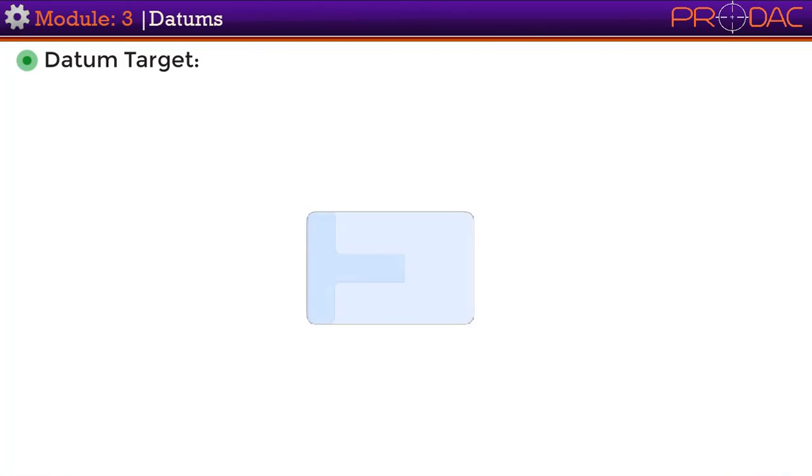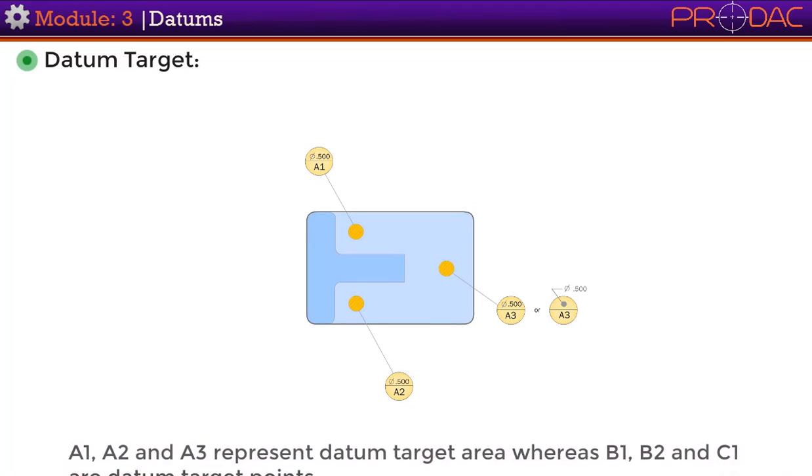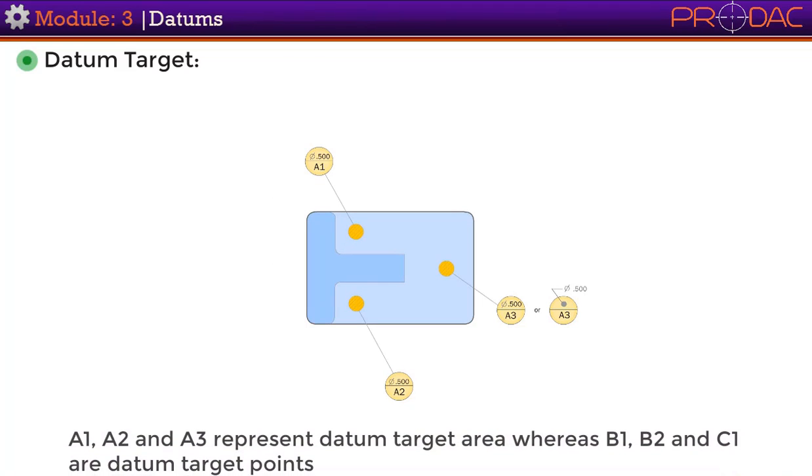This is a drawing of a casting where we have shown how to represent datum targets. A1, A2, and A3 represent datum target areas, whereas B1, B2, and C1 are datum target points.